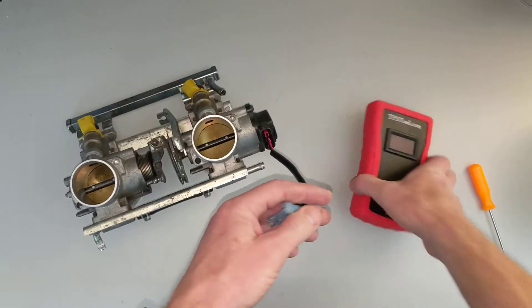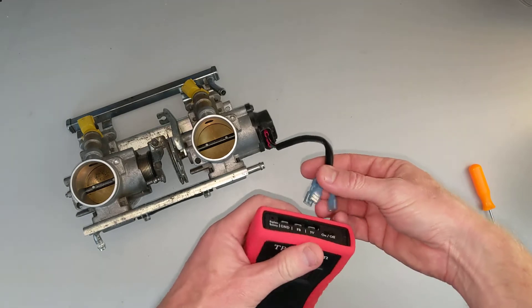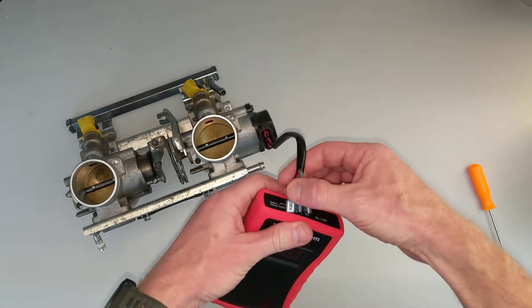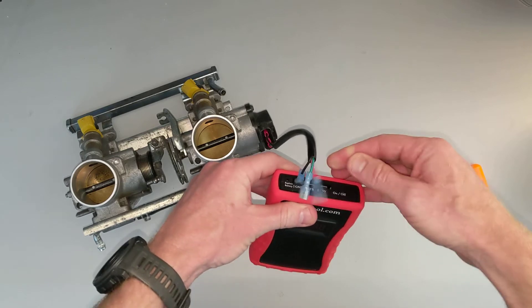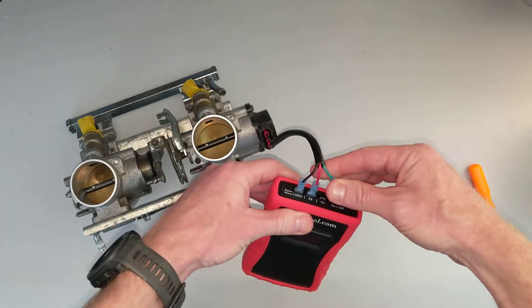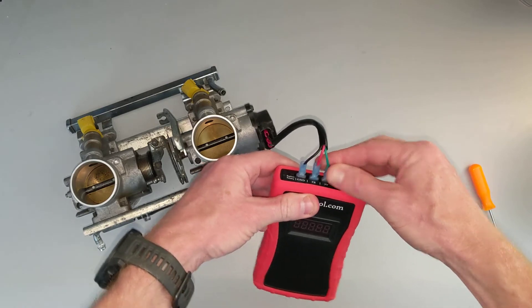So all you have to do now is grab your TPS tool.com pro meter. Let's see if I can hold this where you can see it. The black goes in the ground. Red goes into FB or feedback. And green goes into 5-volts.